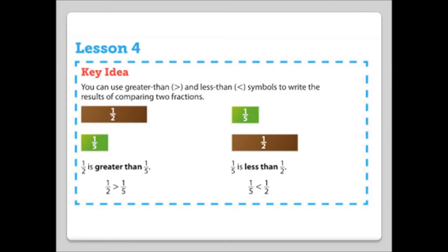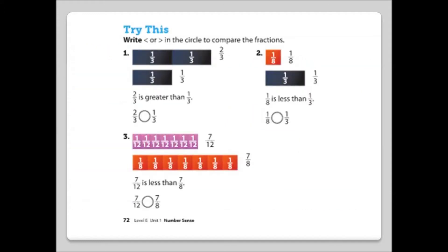Lesson 4 Key Idea: You can use the greater than and less than symbols to write the results of comparing two fractions. For example, one-half is greater than one-fifth, and one-fifth is less than one-half. Try this — write less than or greater than to compare the fractions. Number 1: two-thirds and one-third — two-thirds is greater than one-third. Number 2: one-eighth and one-third — one-eighth is less than one-third.